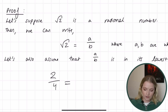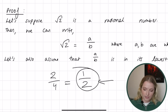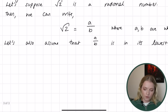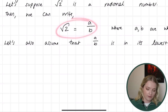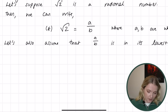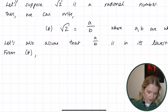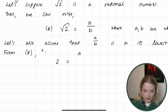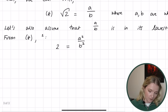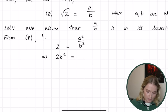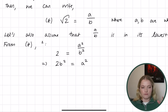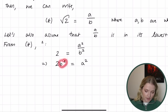So lowest terms means you cannot reduce it any further. Now I'm going to call this equation star for reference. From star, the obvious thing to do is square both sides. Squaring gives: 2 equals a squared divided by b squared. Multiplying both sides by b squared, we get: 2b squared equals a squared.